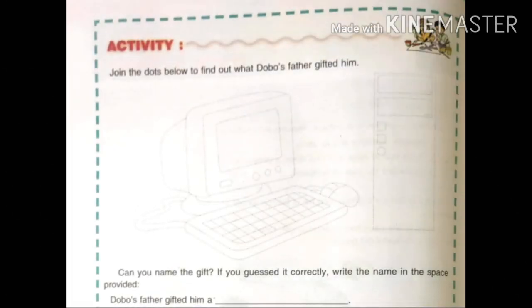Move to the next page. In this page, one activity is given: 'Join the dots below to find out what Dobo's father gifted him.' First you have to join the dots to complete the picture. After that, you will be able to guess what his father has given him. From the outline of the figure, it is clear that it is a computer. So all of you have to write 'computer' in the fill in the blanks given here. Dobo's father gifted him a dash — you will write here 'computer.'